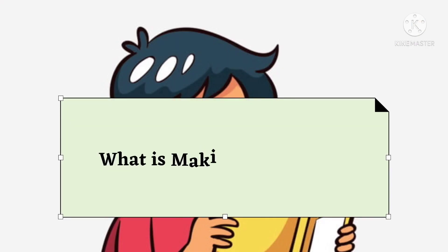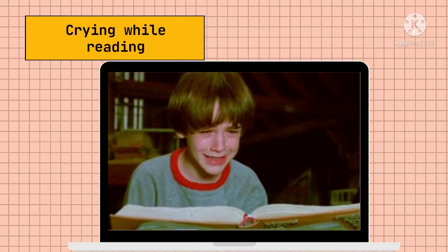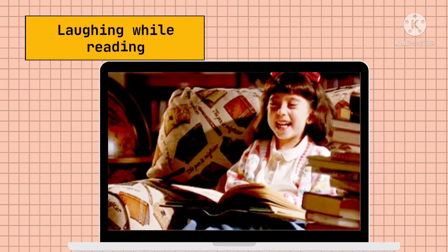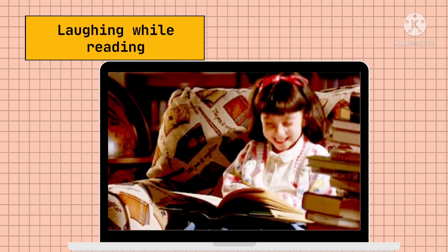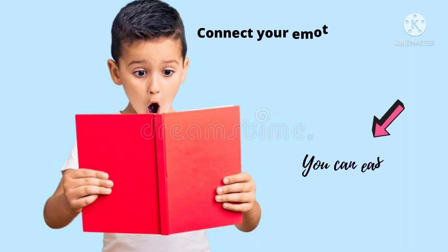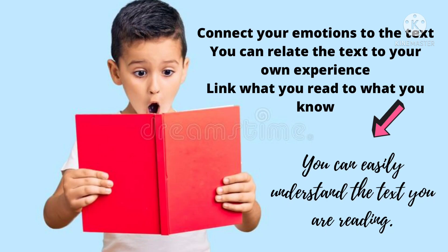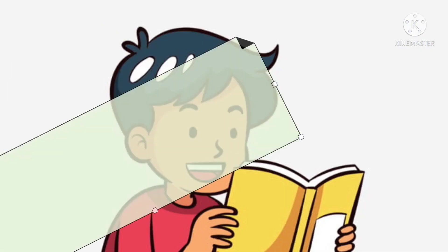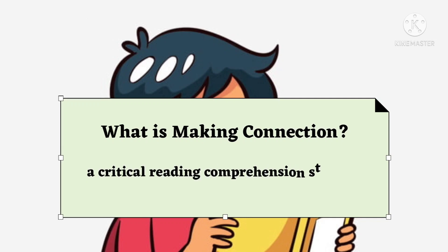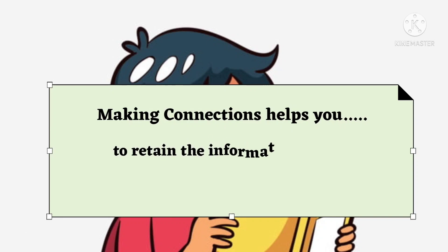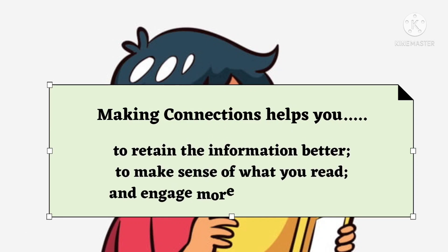Now, what is making connection to text? Have you ever experienced this — crying while reading? How about laughing while reading? You experience this because you personally connect your emotion to the text or story. On top of that, you relate the text to your own experiences. As a result, you can easily understand the text that you are reading. So, making connection is a critical reading comprehension strategy that helps in defining what you are reading. Making connections helps you to retain the information better, to make sense of what you read, and engage more to the text itself.